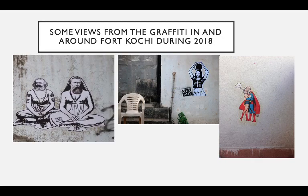Before directly moving into postmodernism, I would like to introduce some graffitis which appeared in Fort Kochi around 2018 during Biennale. These are known as graffitis — paintings made on walls. This graffiti is made by an anonymous person who always writes 'guess who' under these paintings. It is actually a stencil art which came in and around Fort Kochi during 2018.